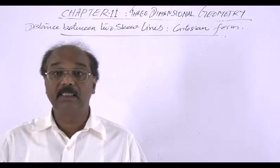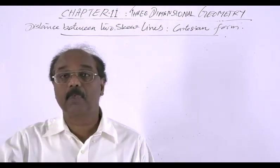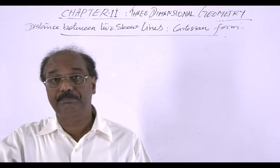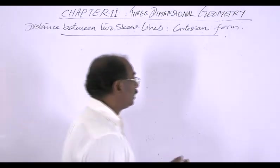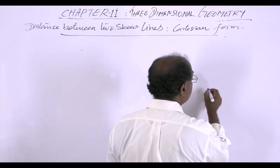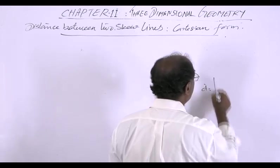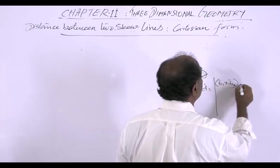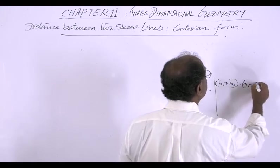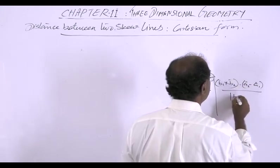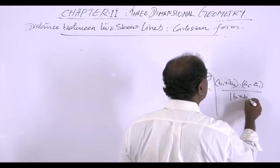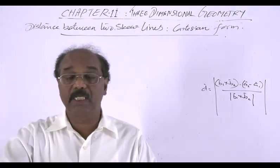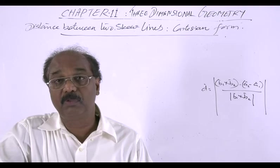Distance between two skew lines in the Cartesian form. We have derived the distance in the vector form. The distance is given by d equals modulus of v1 cross v2 dot a2 minus a1 divided by modulus of v1 cross v2. So this is the distance.